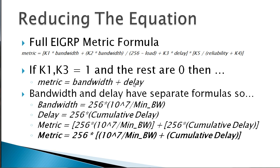So let's go ahead and reduce this. Let's break it down. Here's our original formula, big long nasty one. We know that the end of it got chopped off right away because K5 was 0. And if K1 and K3 are 1 and the rest are 0, basically what that leaves us with is metric equals bandwidth plus delay. Let's just step through that for a second. Metric equals, if K1 is 1, 1 times bandwidth is bandwidth plus this whole section: K2 times bandwidth divided by 256 minus load. Well, if K2 is 0, that's basically plus 0 divided by something, which is always going to be 0.